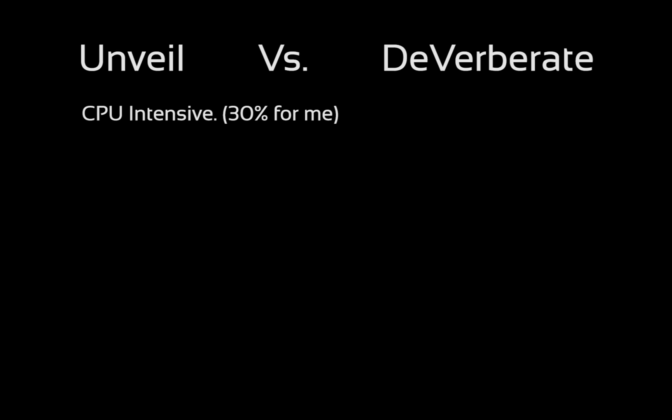Unveil is very CPU costly — you wouldn't want to run it live or even more than one instance at a time. However, Deverberate uses 10 times lower CPU than Unveil, and therefore you could run it live inside projects and even run several instances of the plugin at once without any major issues.